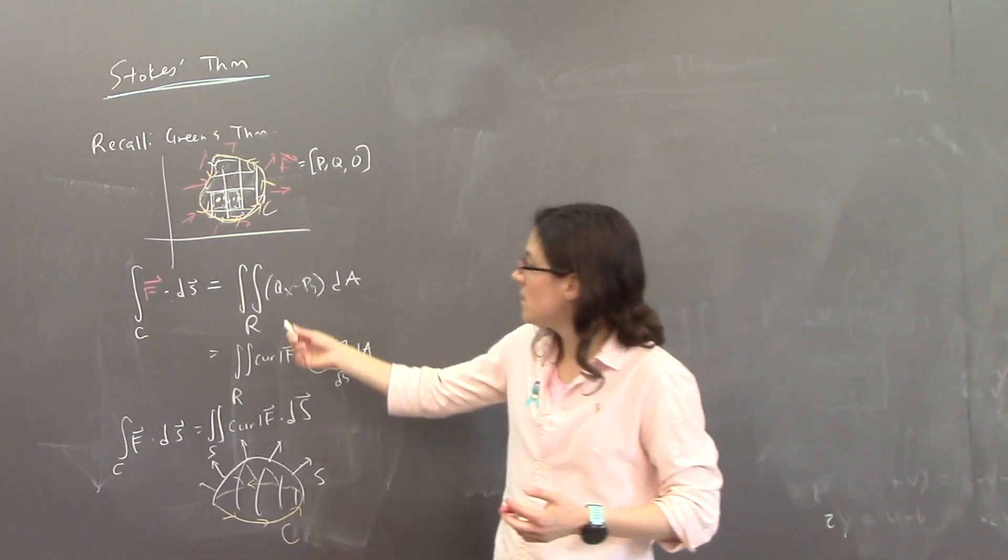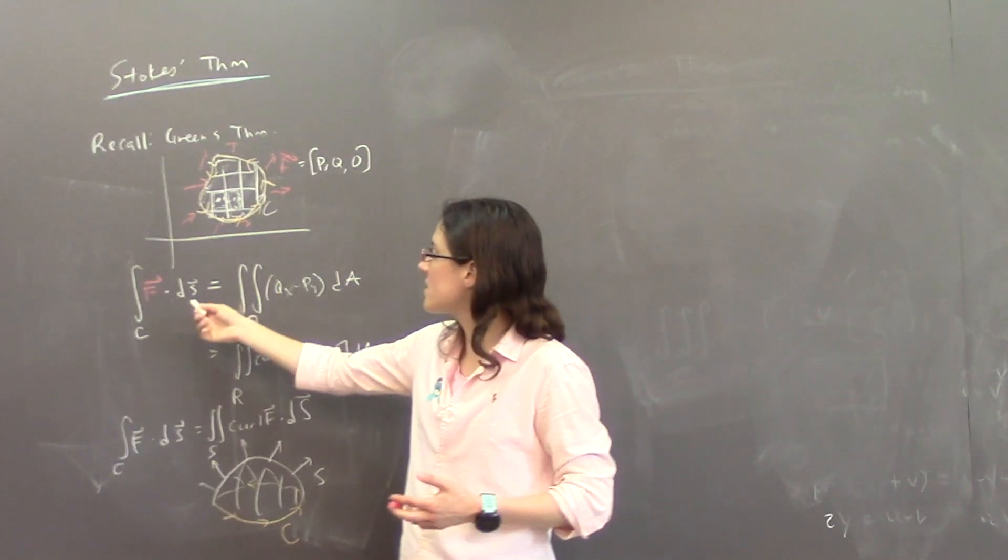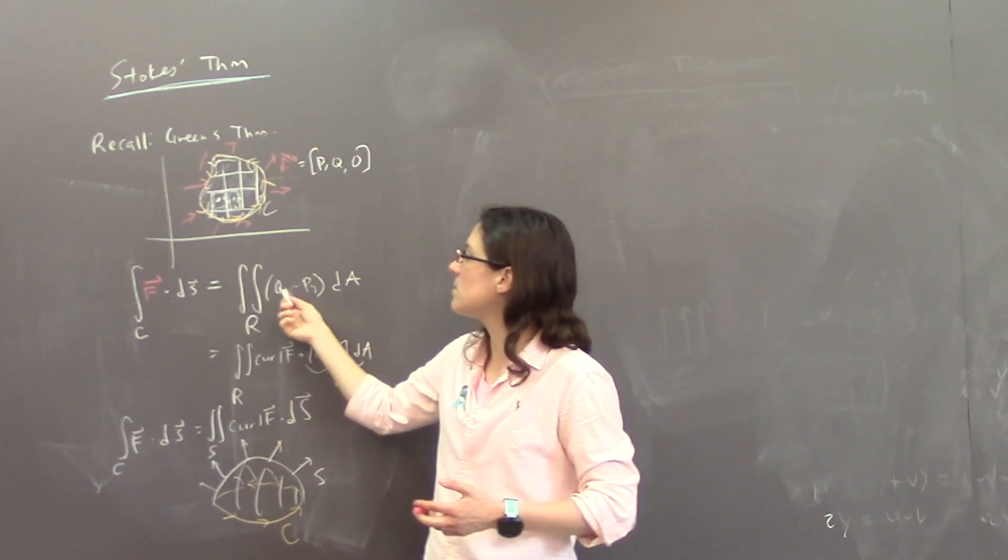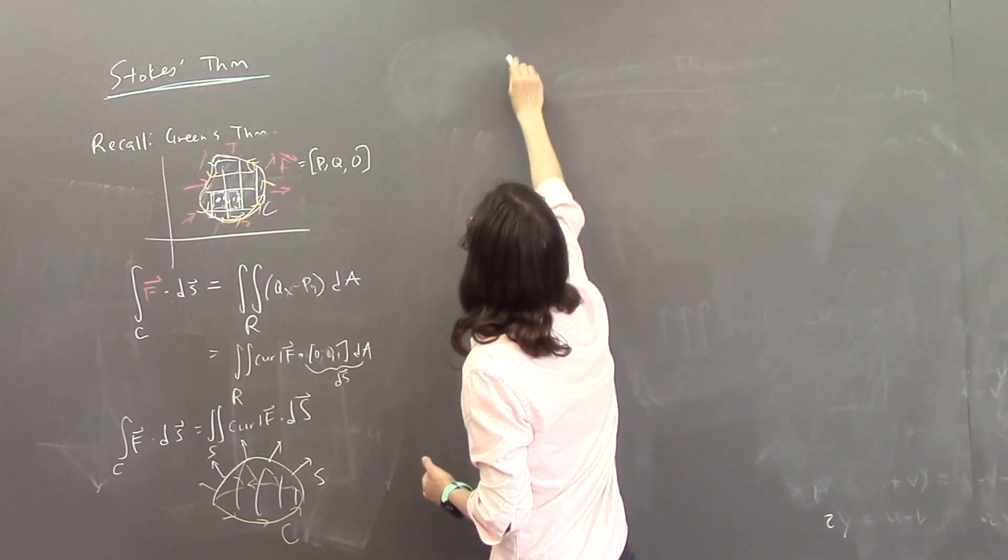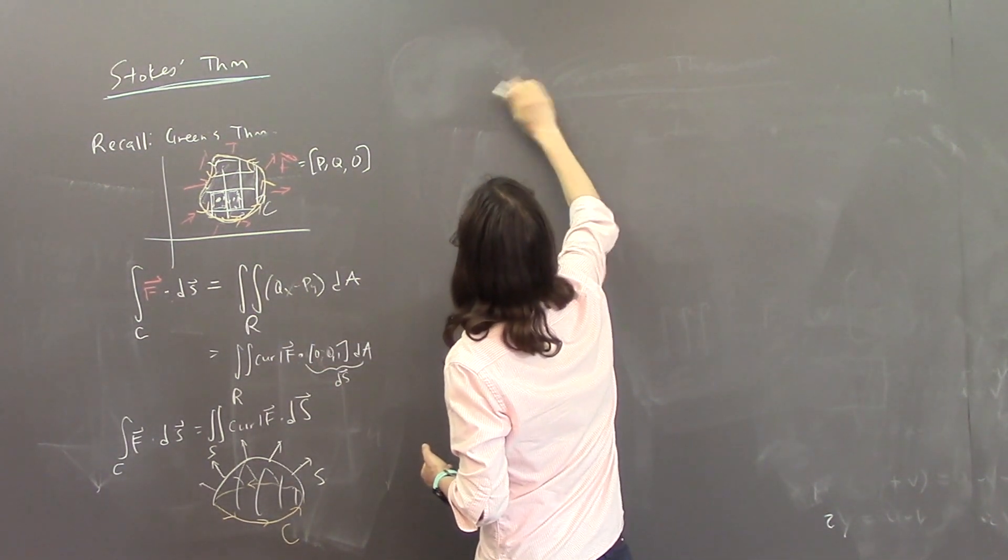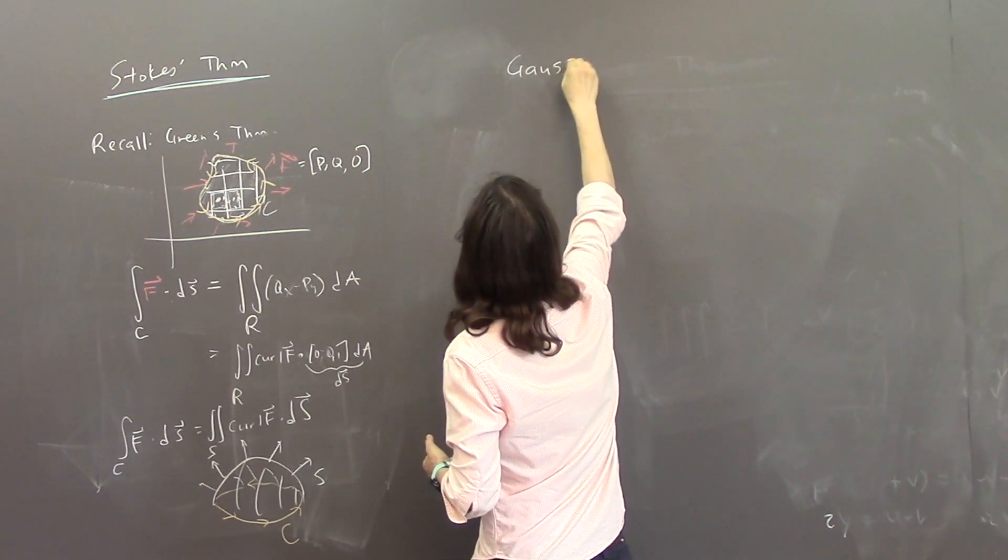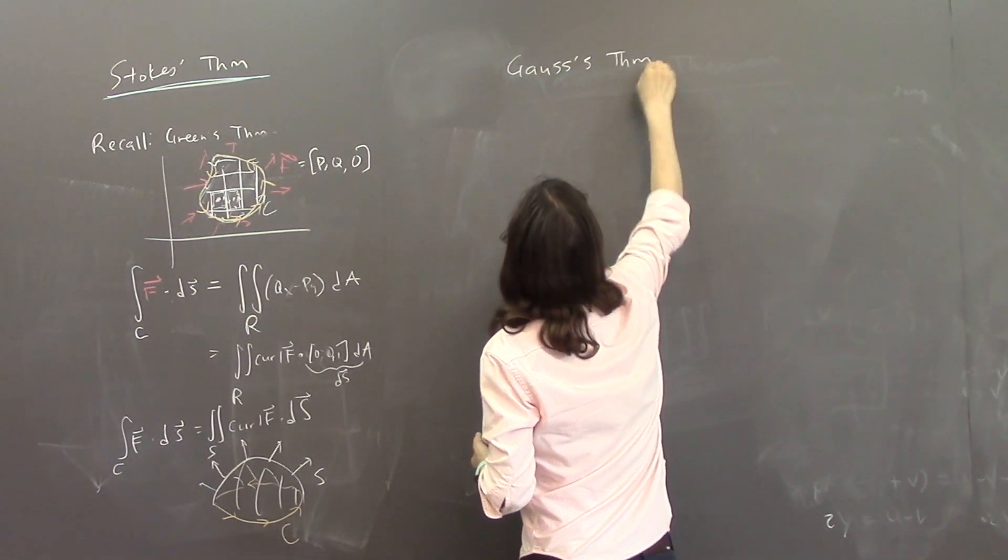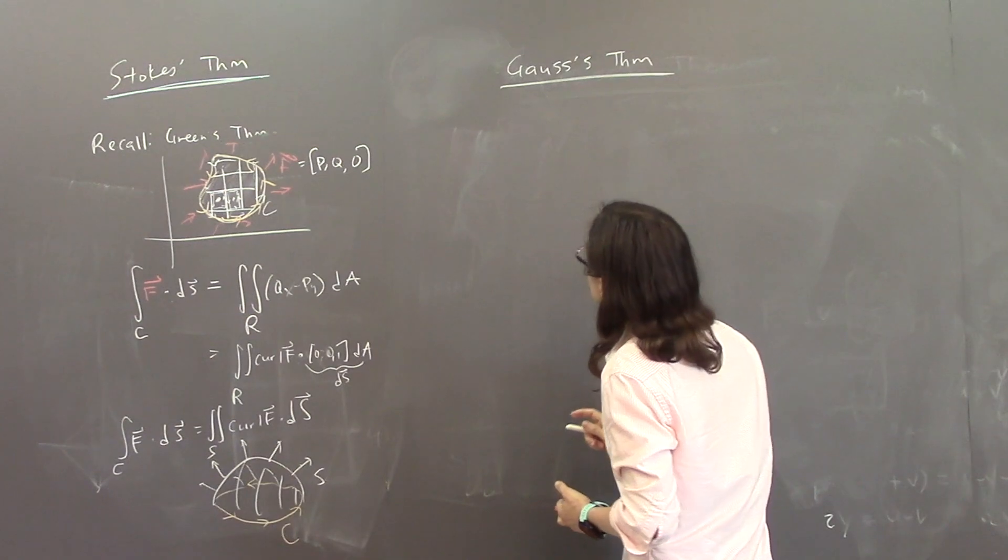So this is telling you how, this is relating single integrals to double integrals. And then Stokes' theorem, no, that was Stokes' theorem. Gauss' theorem, also known as the divergence theorem, goes up a dimension.